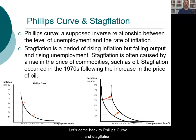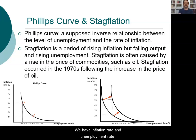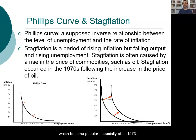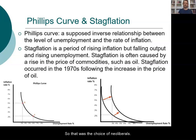Returning to the Phillips curve: we can plot inflation rate against unemployment rate. Policymakers can choose, for example, higher inflation for the sake of lower unemployment — this is the preference of social democrats. But another policy option became popular after 1973: accepting higher unemployment in exchange for lower inflation rates. That became the choice of neoliberals.